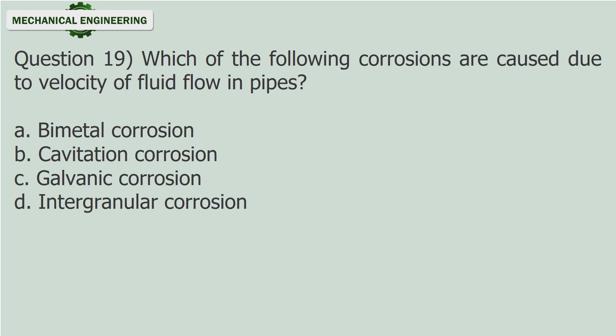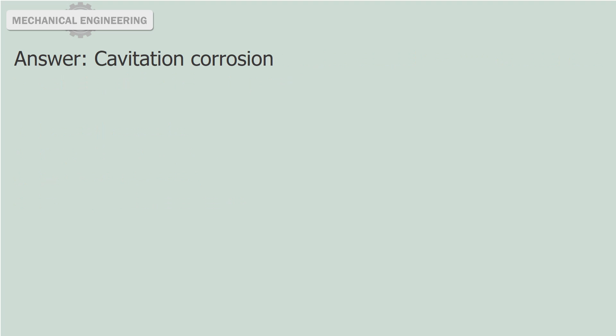Question 19: Which of the following corrosions are caused due to velocity of fluid flow in pipes? A. Metal corrosion. B. Cavitation corrosion. C. Galvanic corrosion. D. Intergranular corrosion. Answer: Cavitation corrosion.